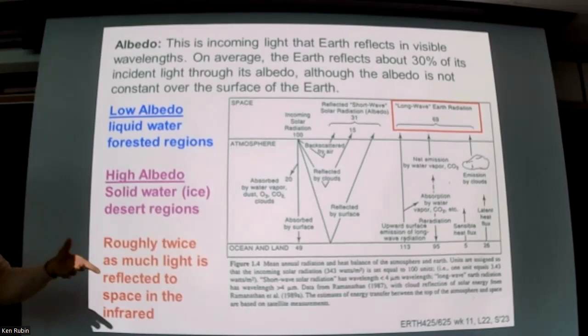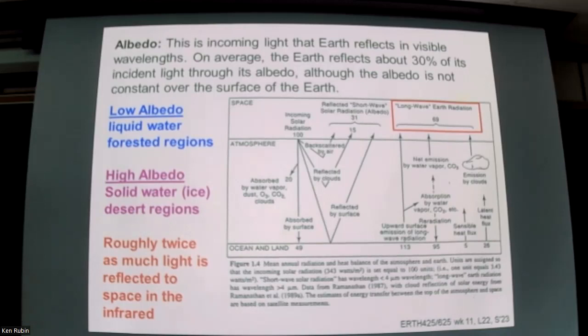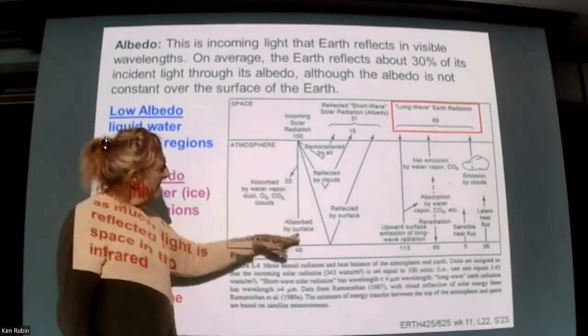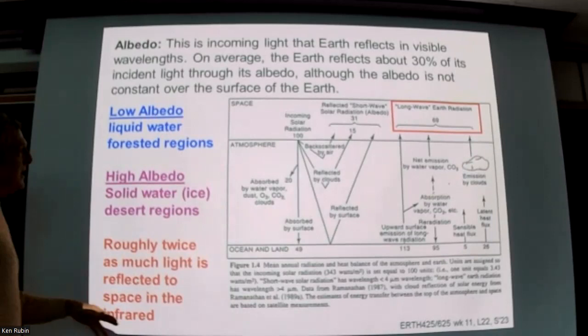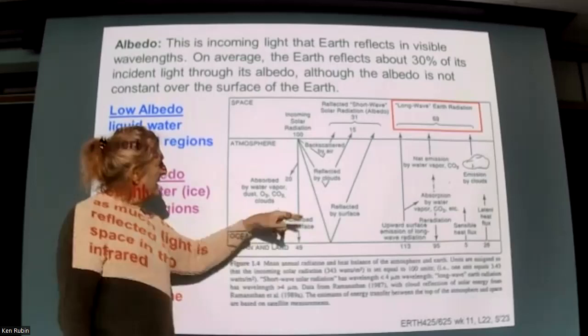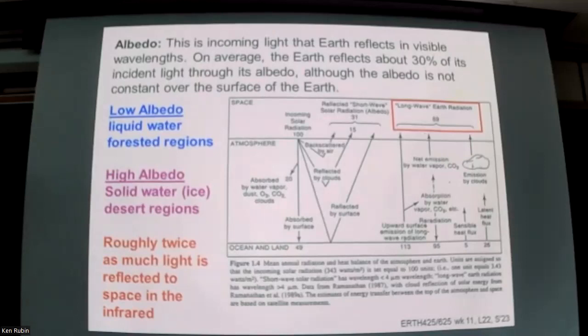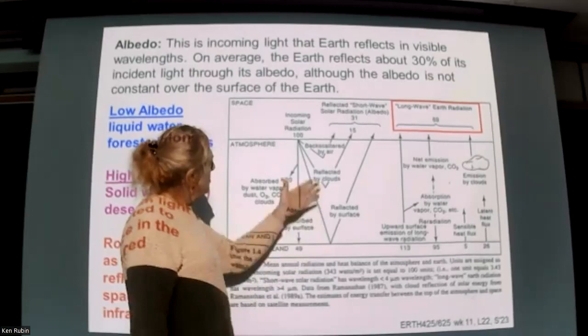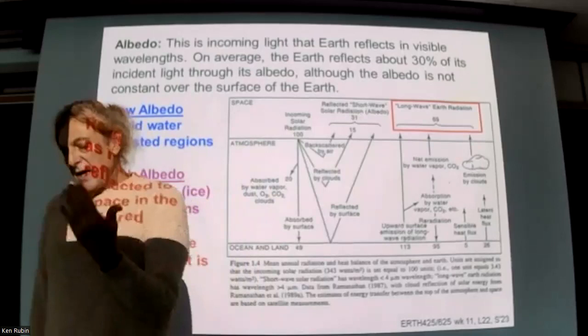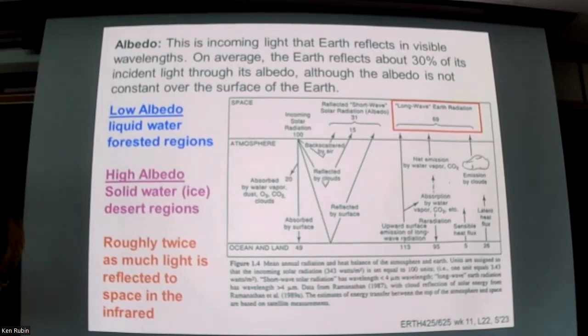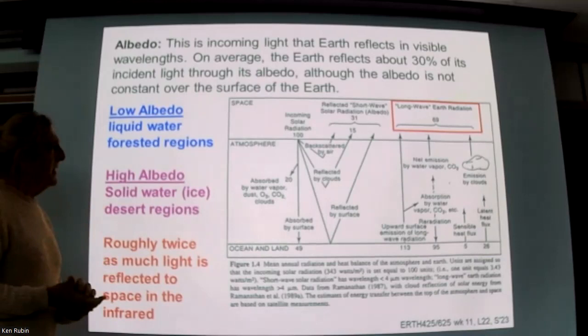Of 100 units that come in, half manages to reach the land surface; the other half is reflected back into space — some backscattered by air, some by clouds, some absorbed by various molecules. Something just slightly less than a third bounces back out into space as albedo — visible wavelength light that you could see from another planet with a telescope.